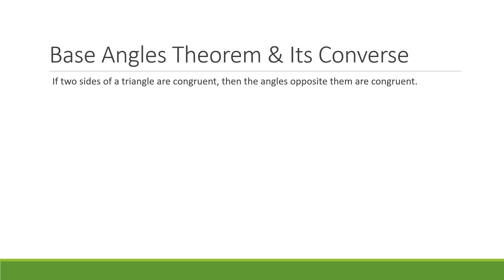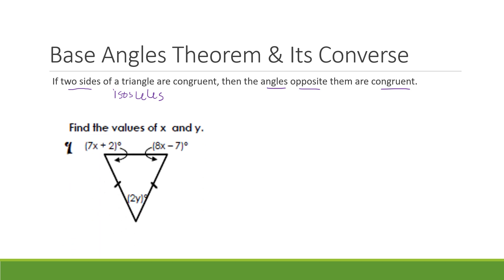The first thing we're going to talk about is the base angles theorem. This should be the first flip in your foldable, and we're also going to talk about its converse. The base angles theorem says if two sides of a triangle are congruent — that would make it an isosceles triangle — then we know that the angles opposite of them are also congruent. This first example is showing you that it's an isosceles triangle because it's showing you that the two sides are congruent. So my base angles are going to be congruent in an isosceles triangle.